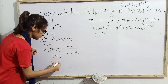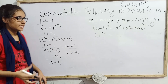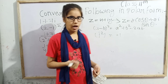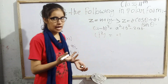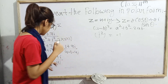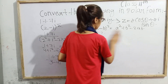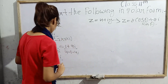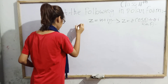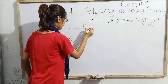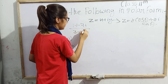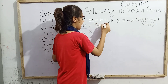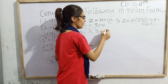As I explained in my previous video, whenever the denominator contains iota, we rationalize it. So we will rationalize. We write (1 + 7i) / (3 - 4i), and multiply both numerator and denominator by the conjugate (3 + 4i).